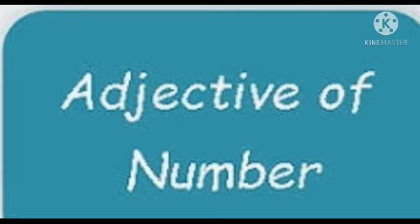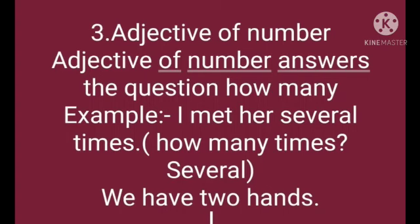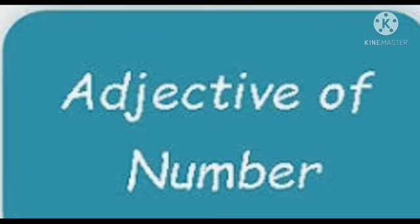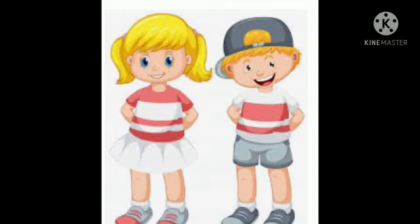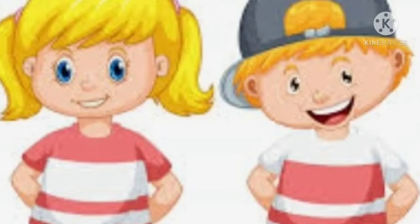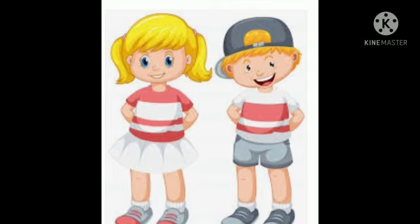Adjectives of number indicate how many persons or things are meant, or in what order a person or thing stands. They answer the question 'how many.' For example: I met her several times. We have two hands. How many times did I meet her? Several. How many hands do we have? Two. So several and two are adjectives of number here.